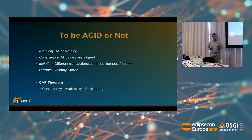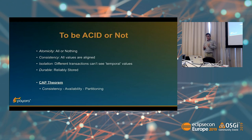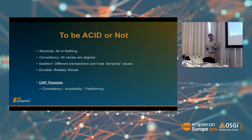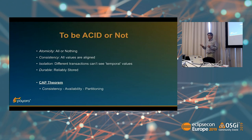That issue is due to the CAP theorem. The CAP theorem covers three aspects: consistency, availability, and partitioning. It has been proven mathematically that you can only have two out of the three at the same time. In a distributed world with partitioning, you have to choose between consistency or availability. Most people choose availability — meaning data is always accessible — and consistency drops out, giving you eventual consistency: at some point in time you will have all the data together, but not immediately.